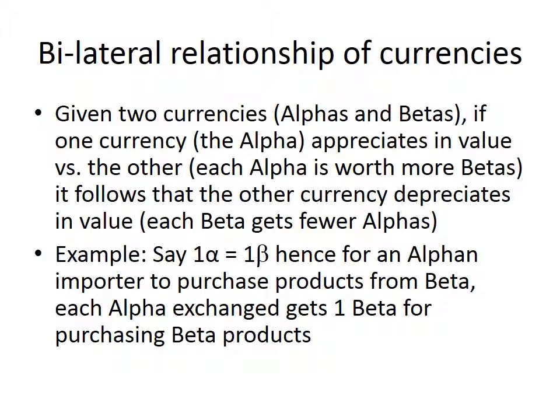We start off simply enough with one alpha equals one beta. For an alphan importer to purchase a product from beta, they go to the bank and exchange one alpha to get one beta for every beta's worth of goods they buy. We can also use euros and U.S. dollars — same basic idea. In fact, when the euro was first introduced internationally in 1999, one euro was equal to one U.S. dollar. For every alpha taken to the bank, you'll get one beta.